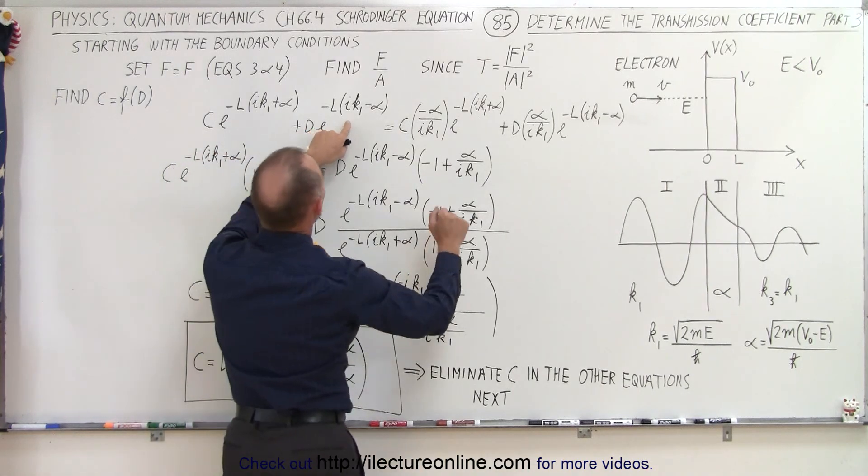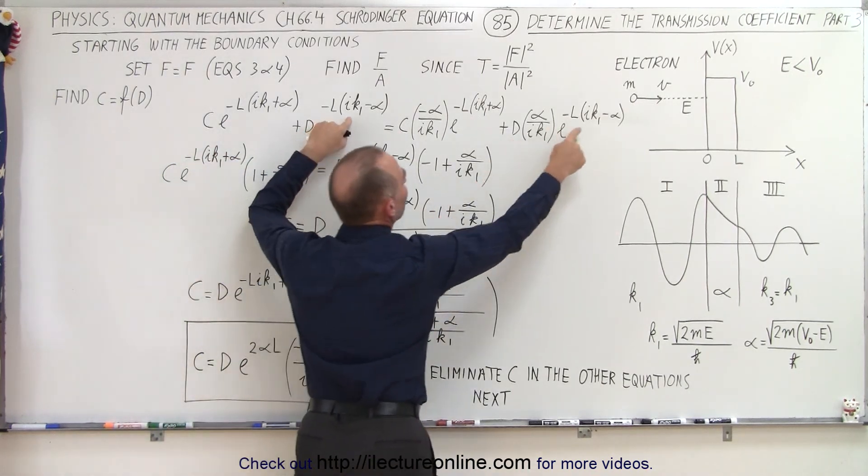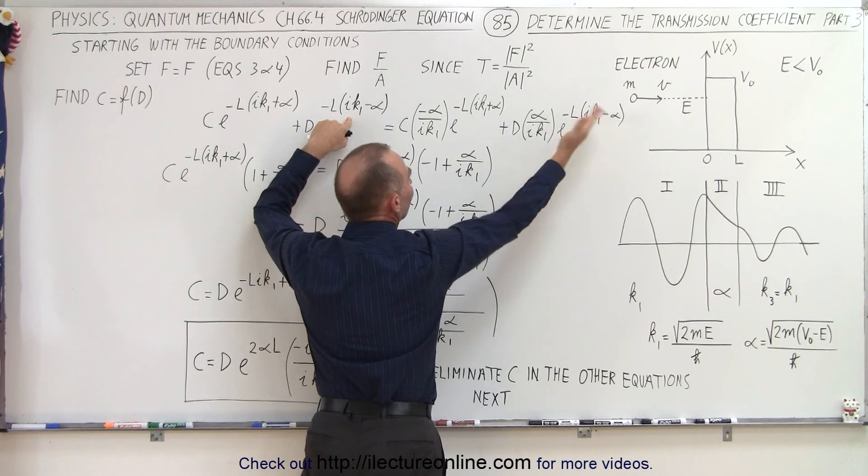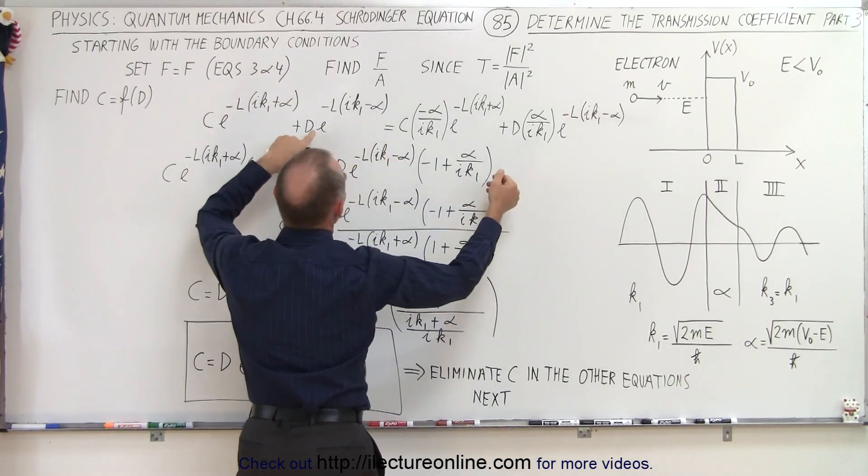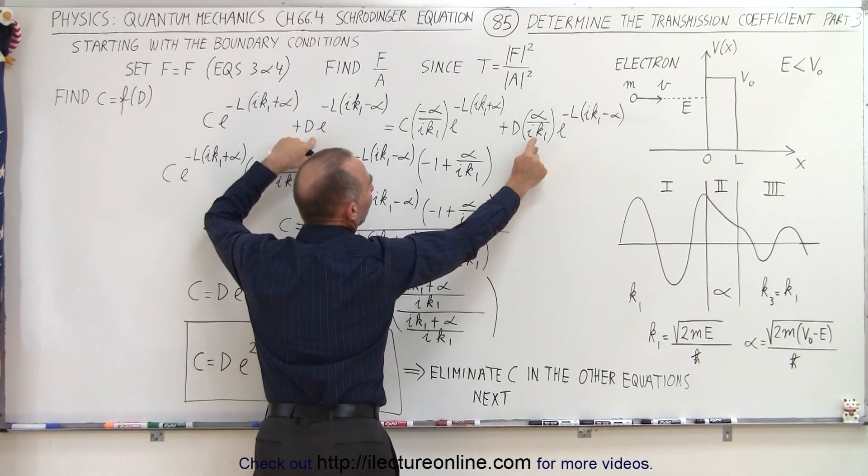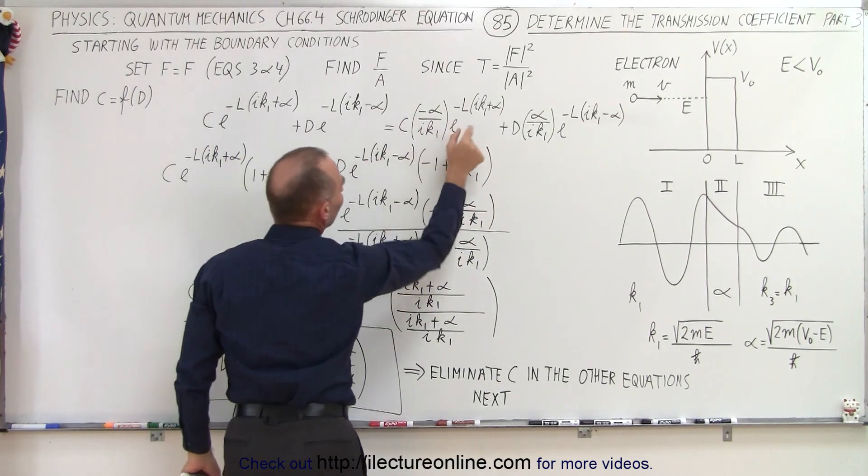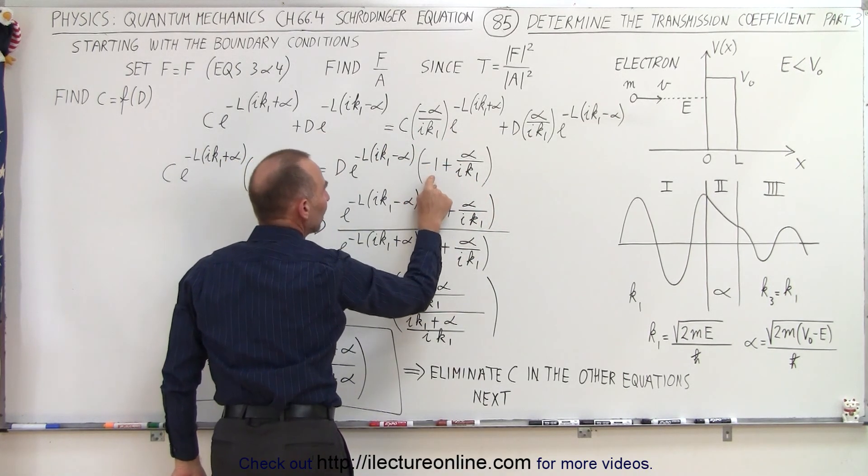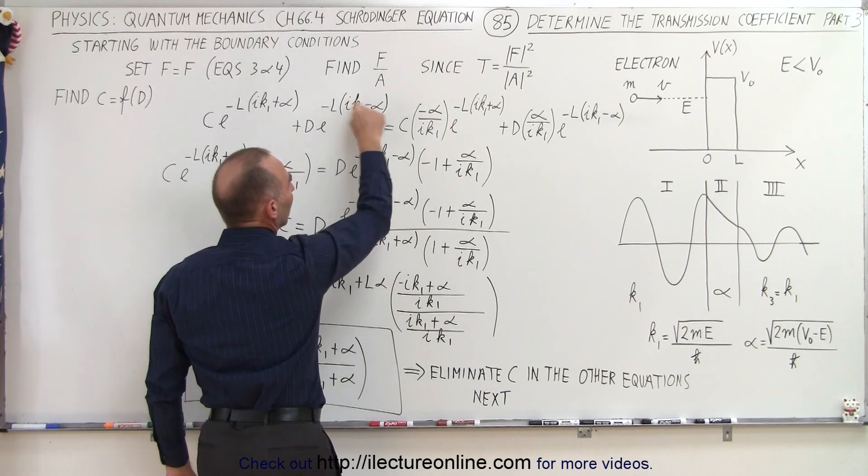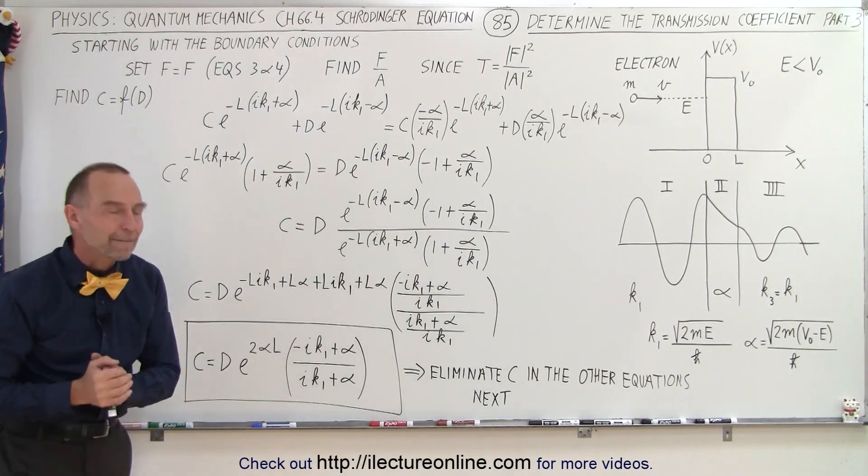Again, notice that both of the terms that have the D in them have E to the same exponent, so we can factor that out. We factor out a 1 and an alpha over IK1. So we do that here. When we bring this over to the right side, the positive one turns into a negative one, but the exponents of their exponentials remain the same.